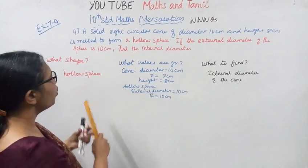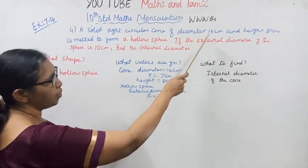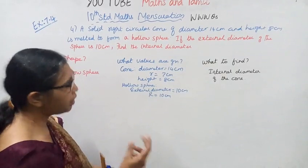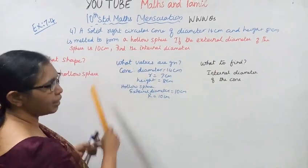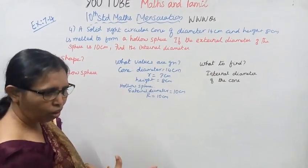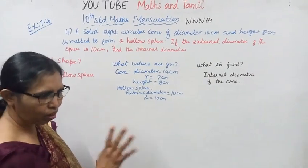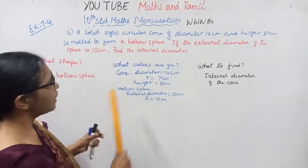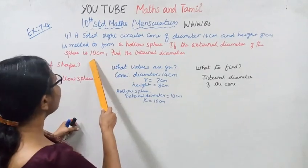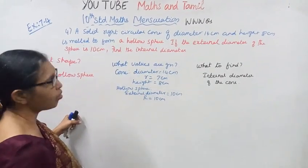The cone has diameter 14 centimeter and height 8 centimeter. The hollow sphere is internal and external; its external diameter is 10 centimeter. We need to find the internal diameter.